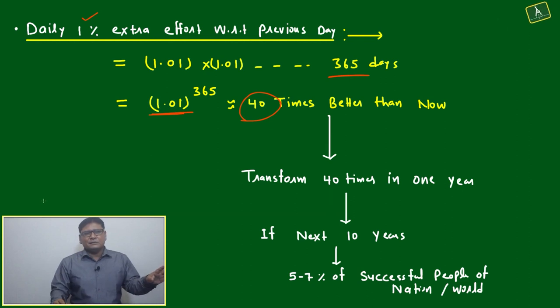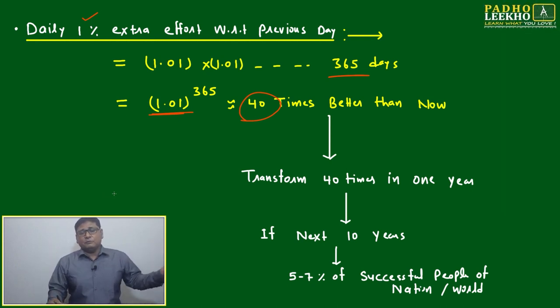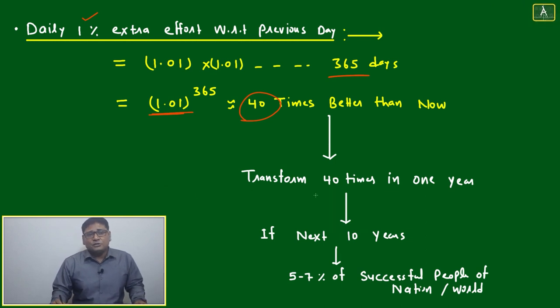And other people will not be able to match with you. Transform 40 times in one year. In the next 10 years, you will become in the top five to seven percent of successful people in this world or nation—diamond club.